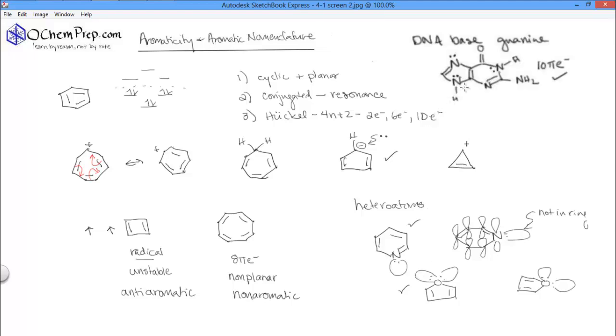This is a structure that's on the summary document of one of the DNA bases, guanine. All of the DNA bases are aromatic, and it's instructive to count the pi electrons and look at the nitrogen pi electrons.